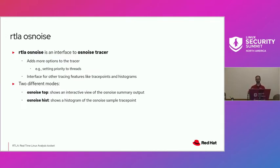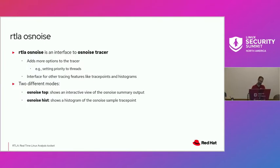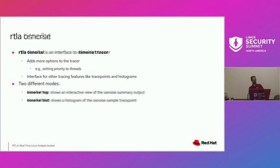I can also enable tracing histograms straight from the tool. RTLA OS noise has two modes: the top mode, which shows a summary of the tracer output, and the hist mode, which computes histograms that can be parsed into data for presentation. Similarly, timer lat has a top mode and a hist mode, with additional options like setting thread priorities and configuring SCHED_DEADLINE.